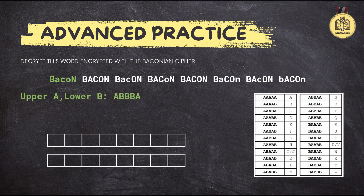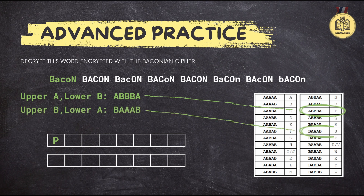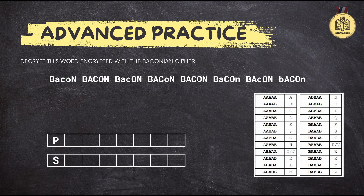Let's start with option one: uppercase letters for A, and lowercase letters for B. With option one, 'bacon' decodes to the letter P. Now let's try option two: uppercase for B, and lowercase for A. In this case, 'bacon' decodes to the letter S. So both options give us valid letters according to our Baconian cipher key. How do we choose the right one?